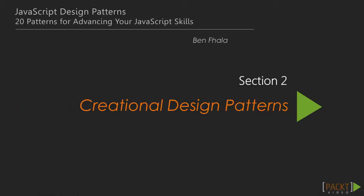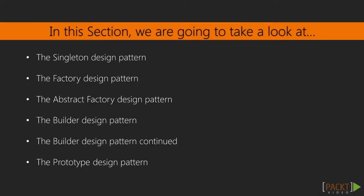Welcome back. In section two we're going to go into the group of four design patterns. The first group is the creational design patterns, which relate to the creation of objects. The first one is the singleton, intended for when we want only one instance of a specific object. Above that is the factory pattern, then the abstract factory, which is more sophisticated, followed by a builder, which is even more sophisticated. We'll wrap up with the prototype design pattern.